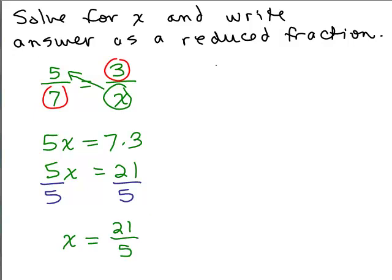So this time, nothing reduces. So I have X equals 21/5. Now, that's written as a reduced fraction. If I were going to write it as a mixed number, we would do 5 into 21, which is 4 and 1/5.